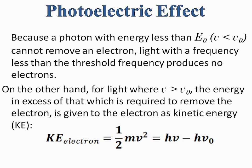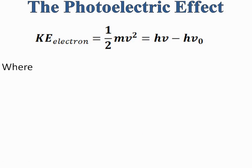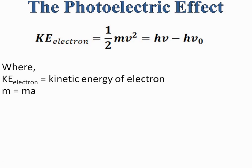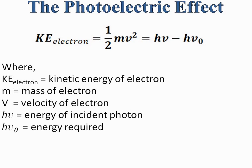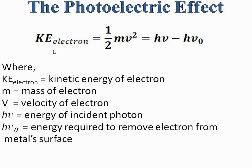In this equation, KE represents the kinetic energy of the electron. m is the mass of the electron and v is the velocity of the electron. h nu is the energy of the incident photon, which is greater than the threshold energy required to remove an electron from the metal surface. And h nu naught is the energy required to remove the electron from the metal surface. The kinetic energy possessed by the electron is the difference between the incident photon energy and the threshold energy.